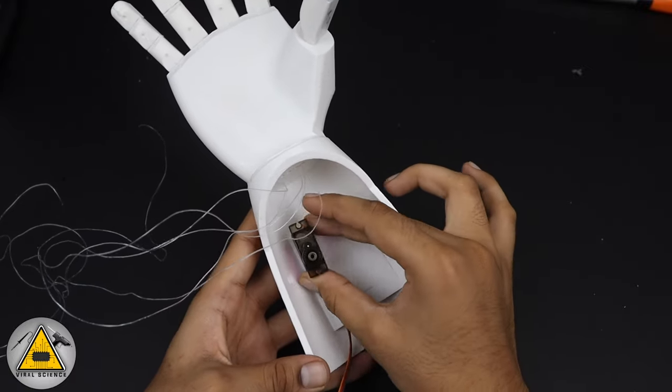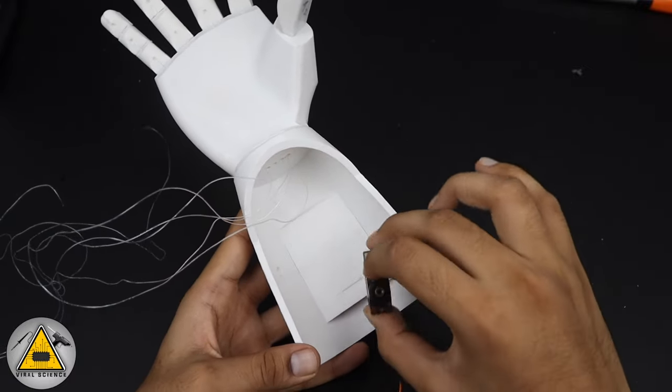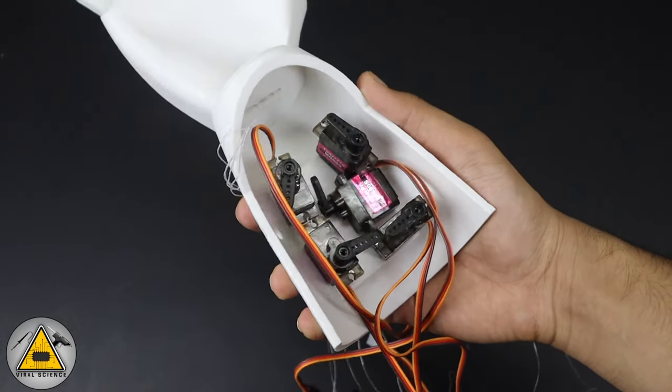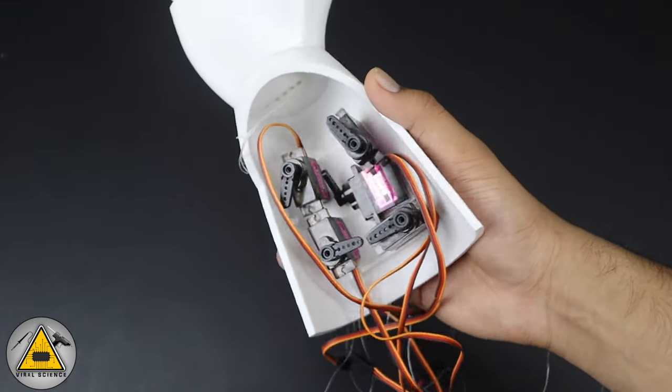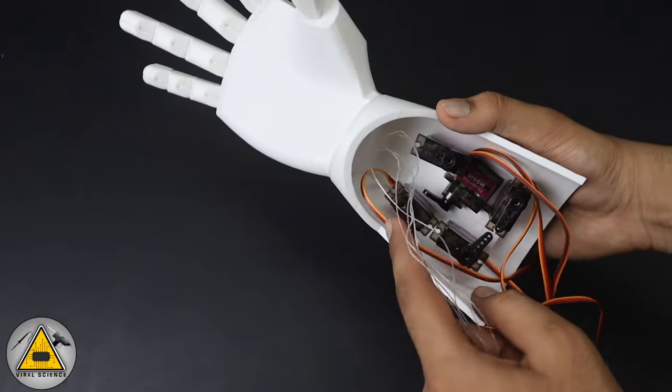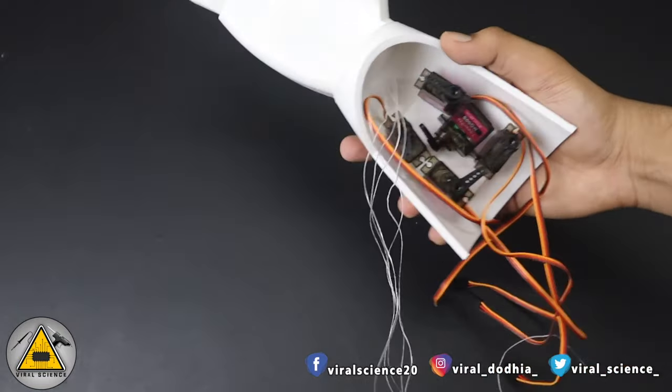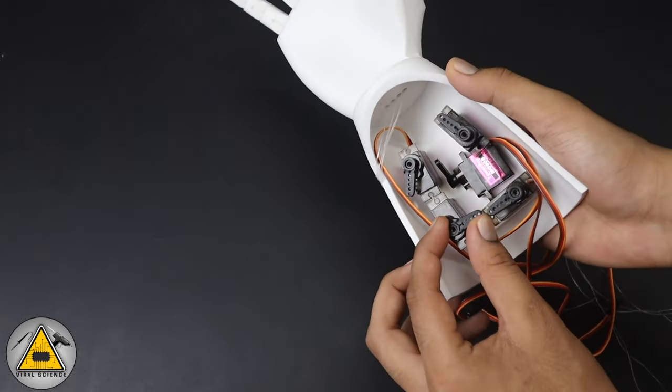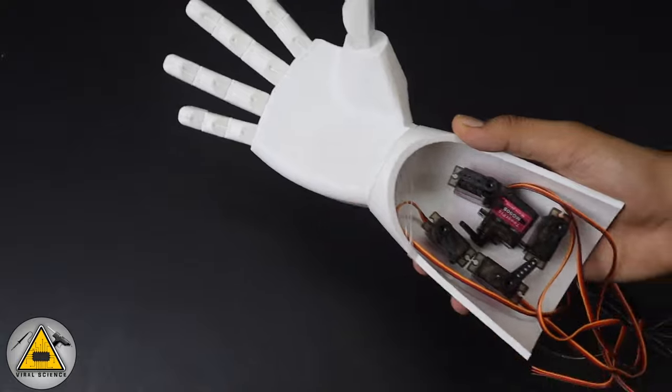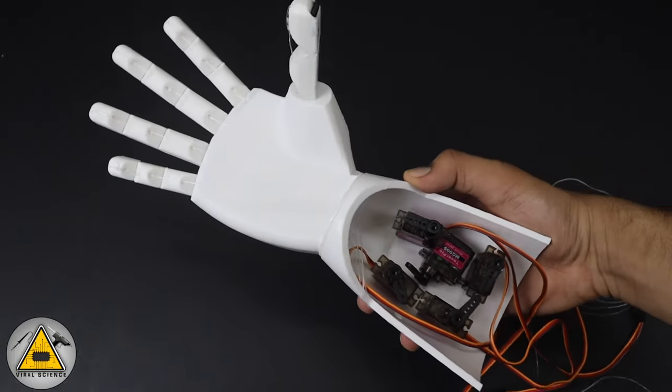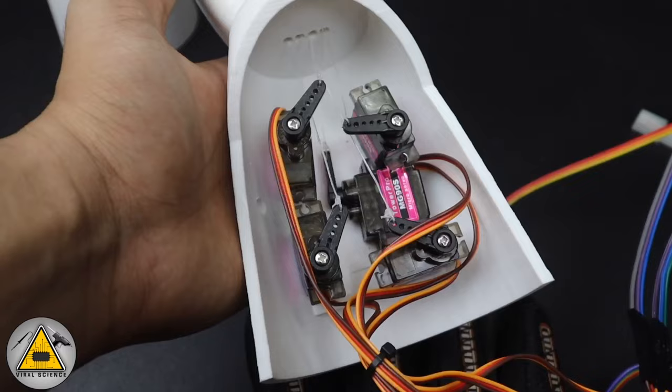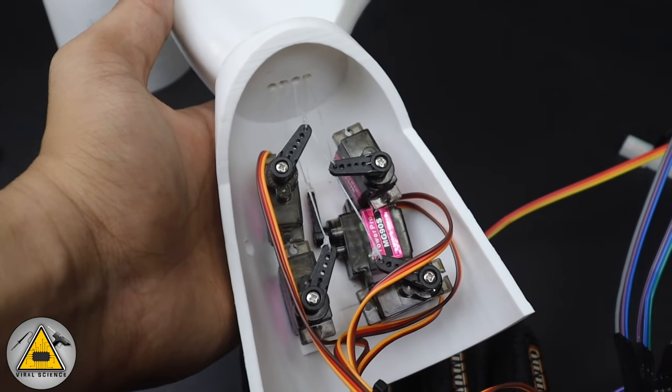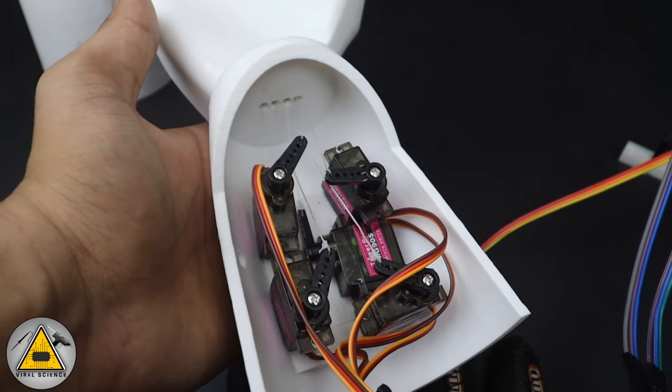So now we'll connect the servo motors on this bottom part with the super glue. You can see the alignment of the servo motors, how I have stuck it. And now you need to connect the string to each of the servo motors arm. Now I have connected the string to the servo arm and also put a drop of super glue so it won't come out.